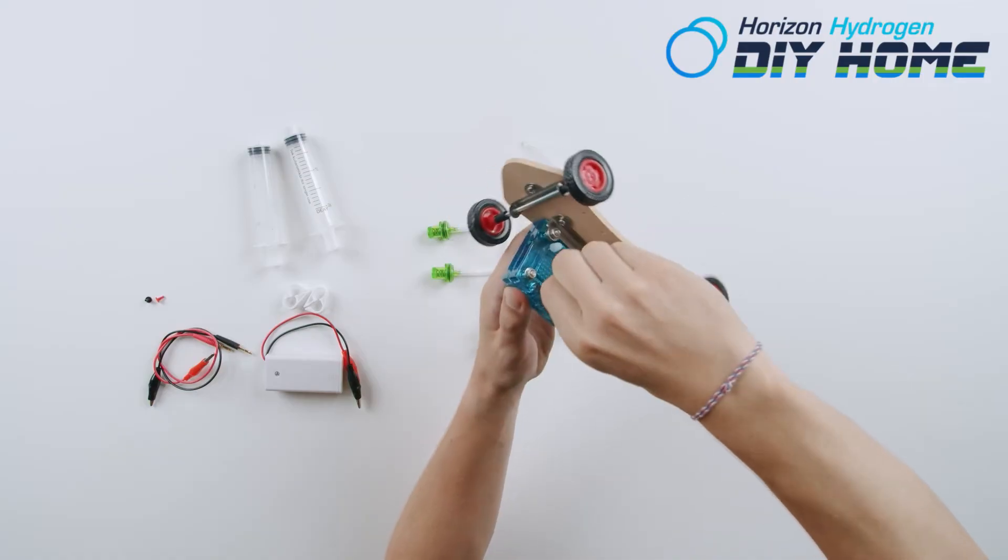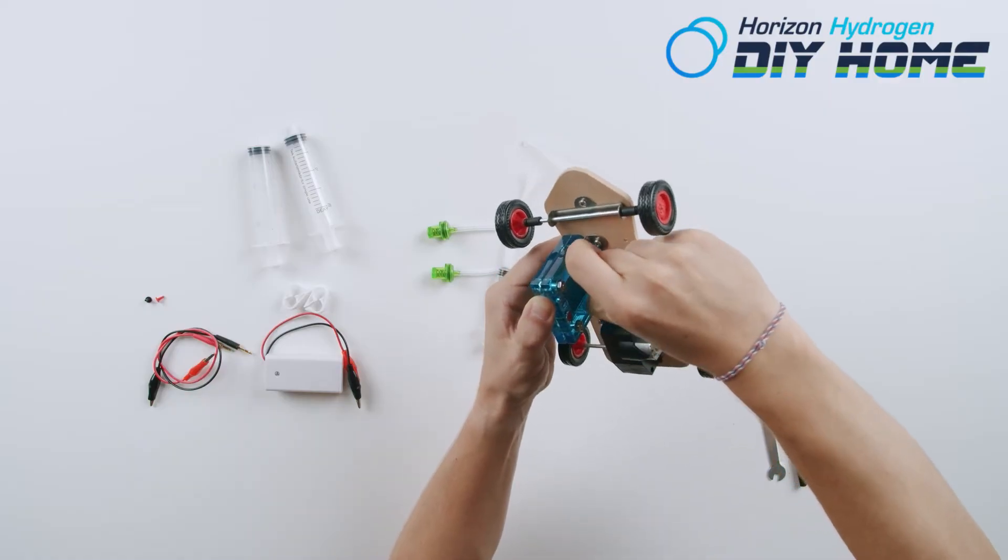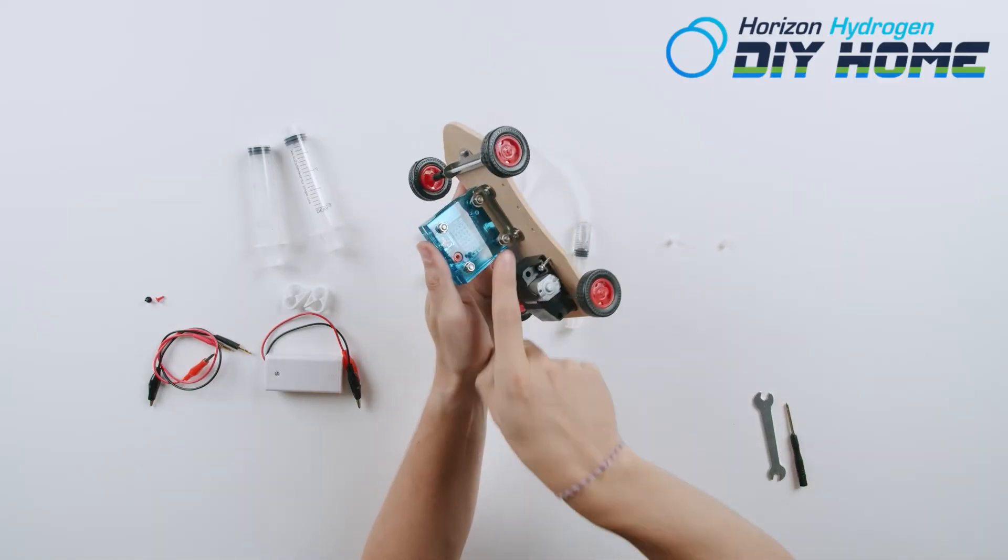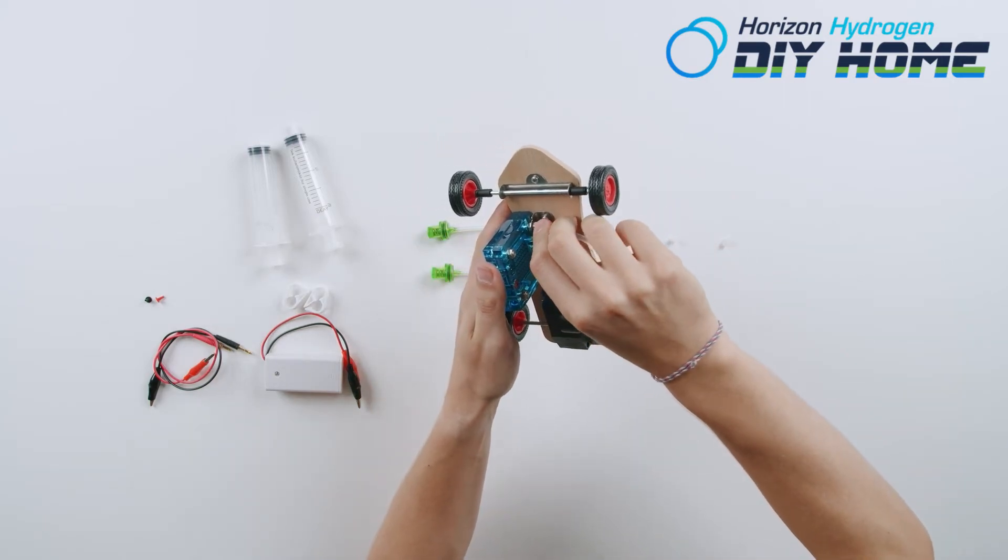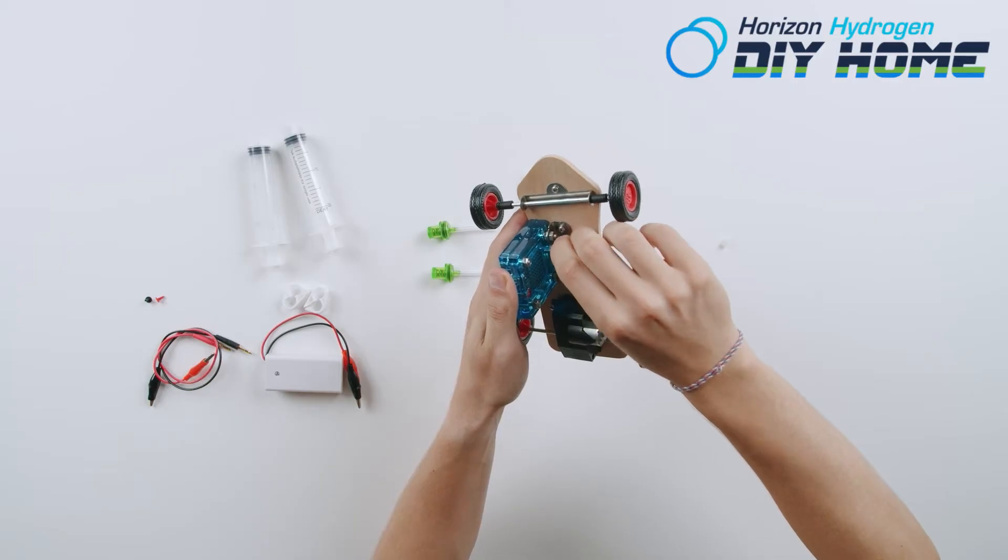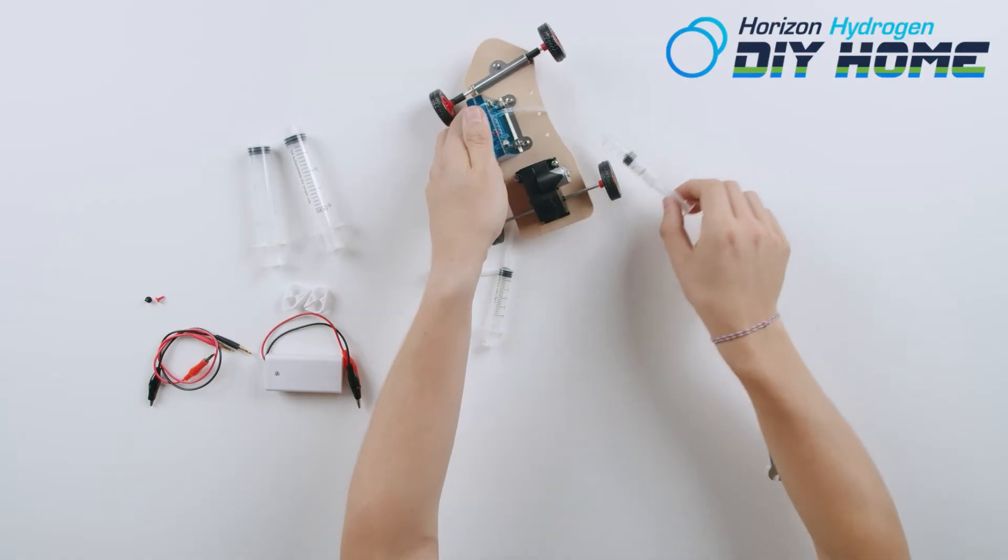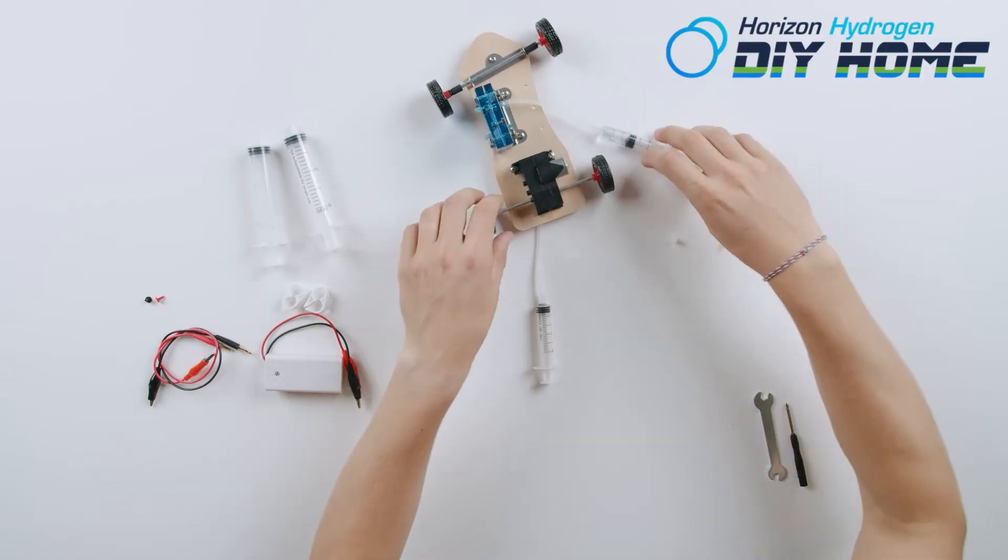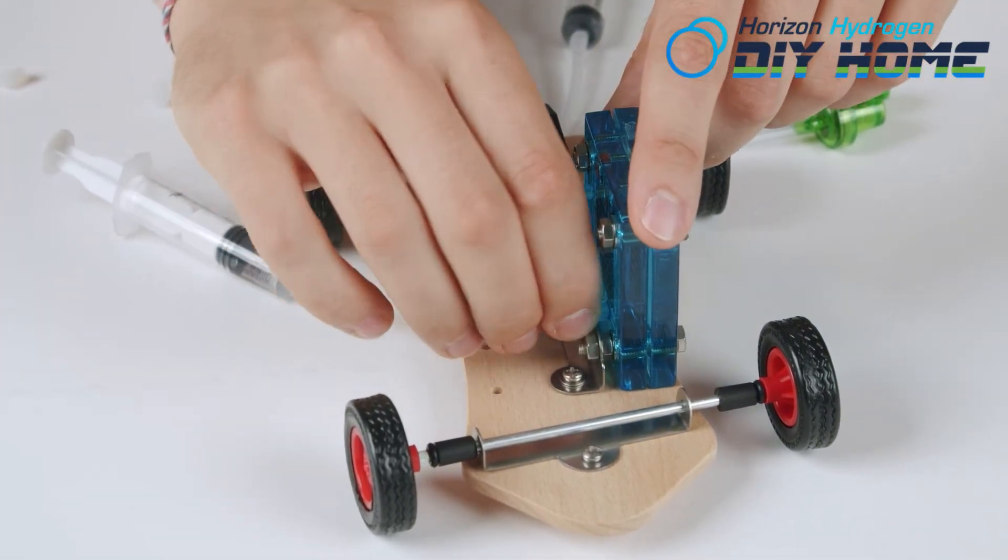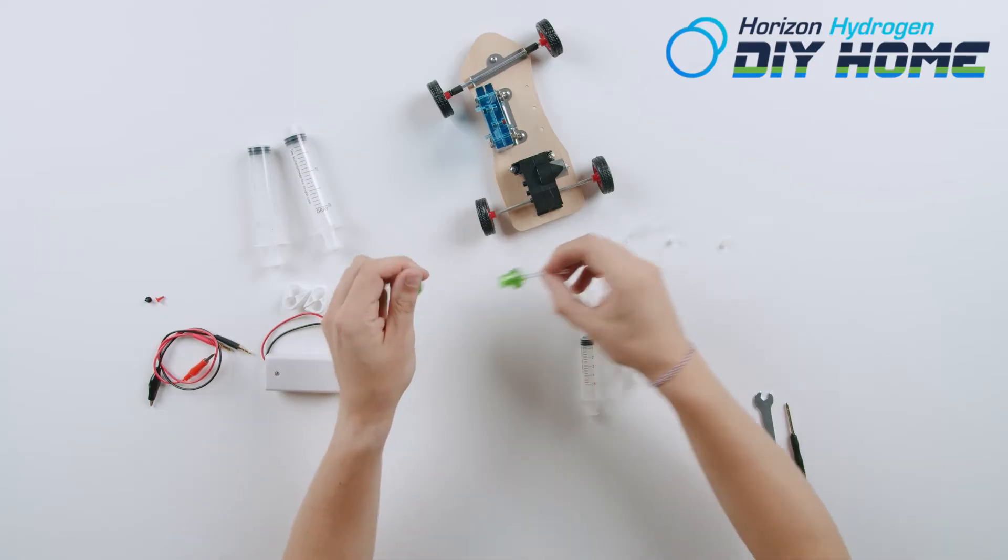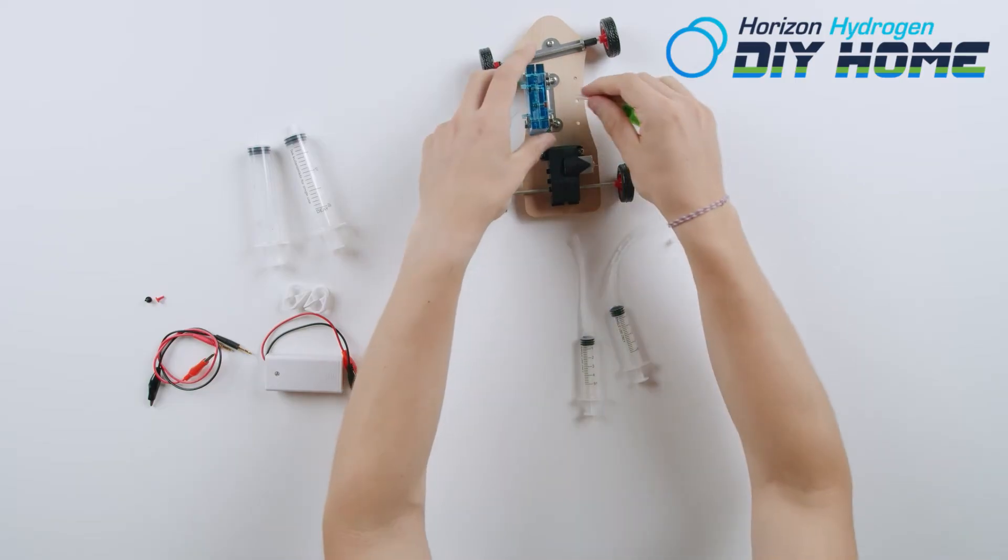Remove nozzle covers from fuel cell. Take filled syringe and install it to the lower oxygen side of the fuel cell. Hydrogen side is marked with H2 and oxygen side is marked with O2. Some water may leak from the top nozzle. Install pressure relief valve on bottom of both nozzles.